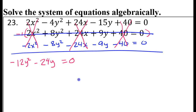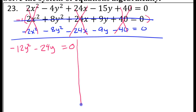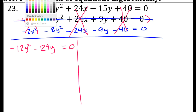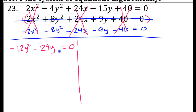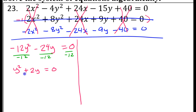I have this new equation that only has y's in it, so I should be able to solve this for y. I notice that both terms are divisible by 12, so I'll divide by negative 12 to get rid of the negative sign as well. That gives y squared plus 2y equals 0, which is much more manageable. You can't divide by a variable because it could be 0, so instead factor out the GCF — in this case y.